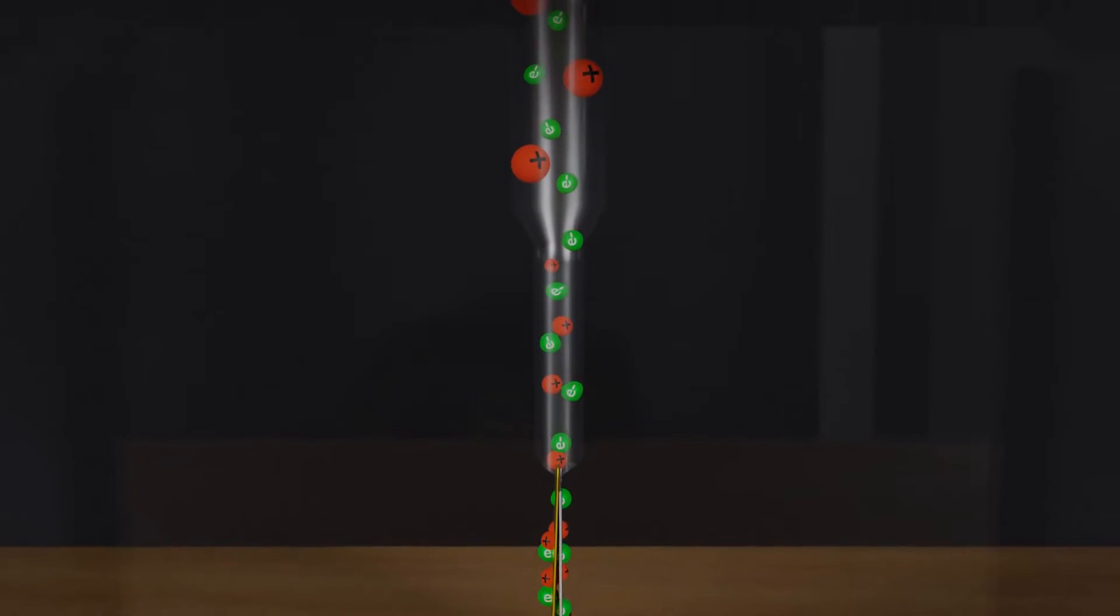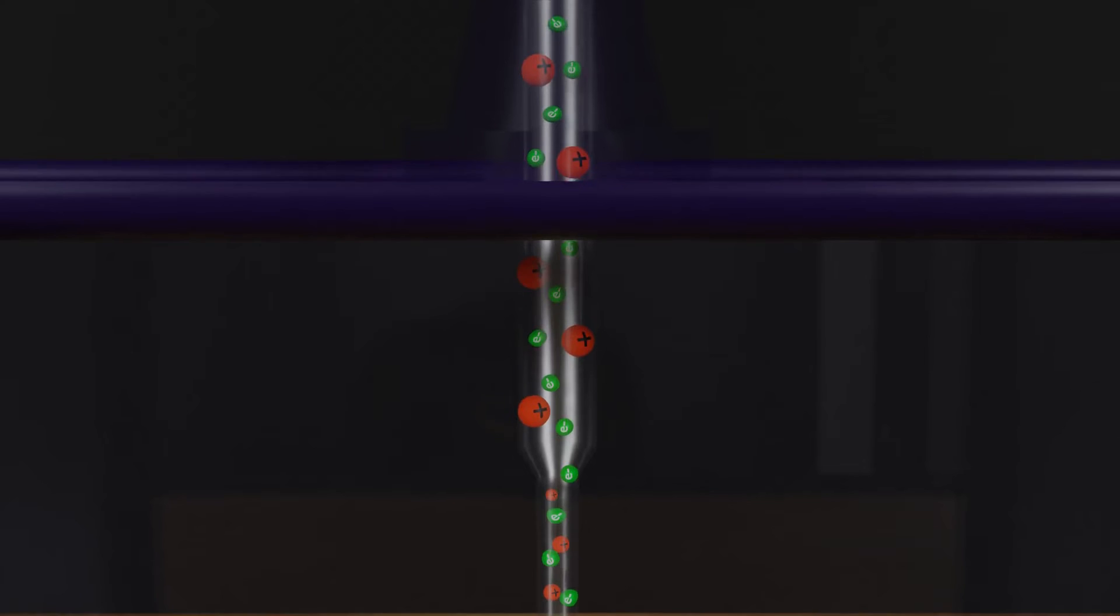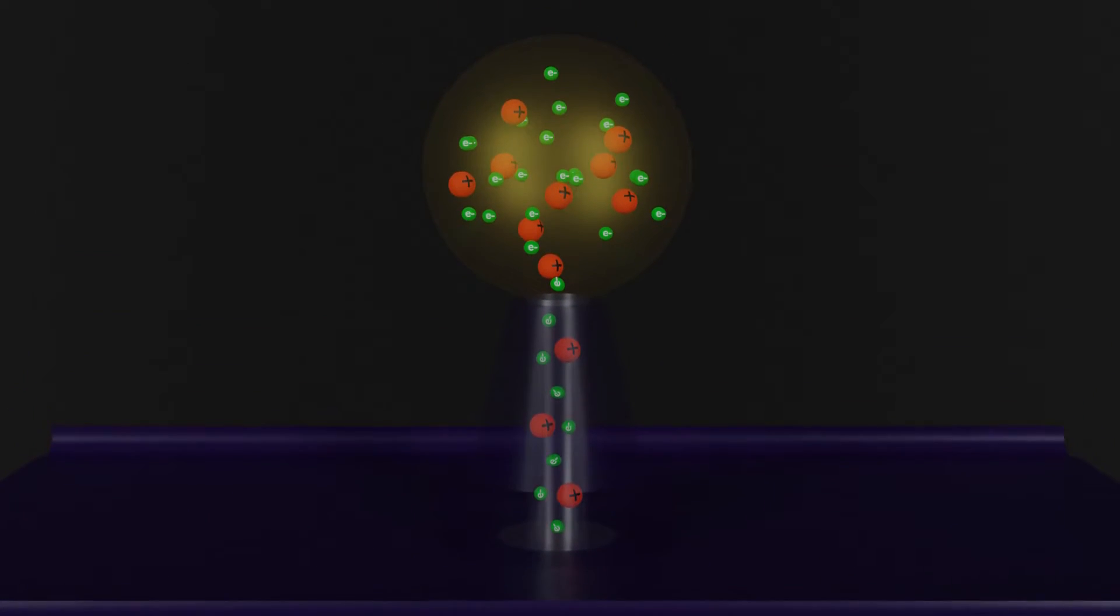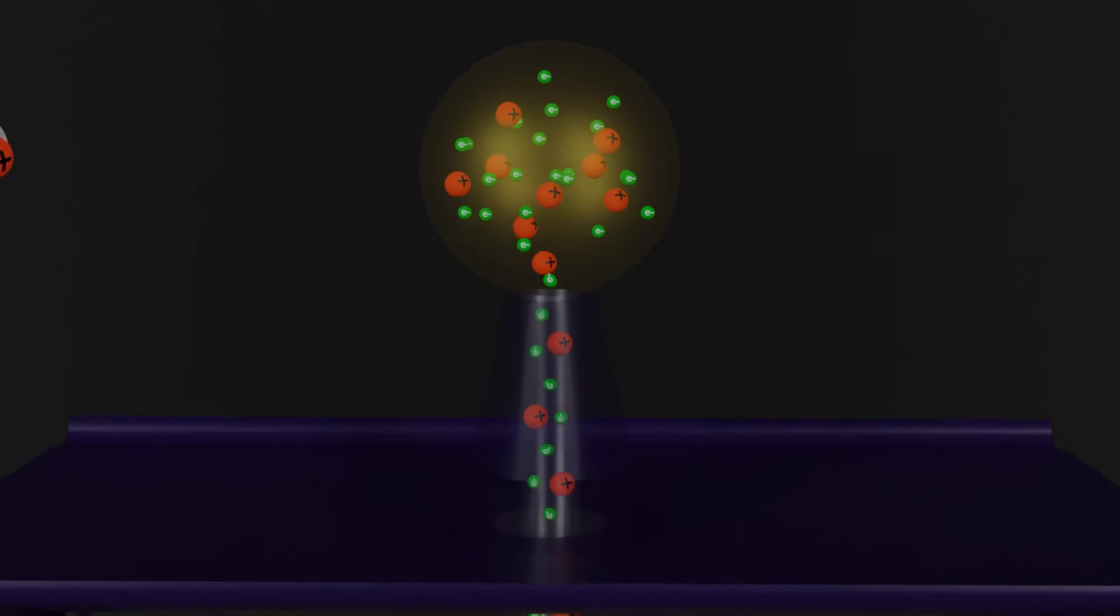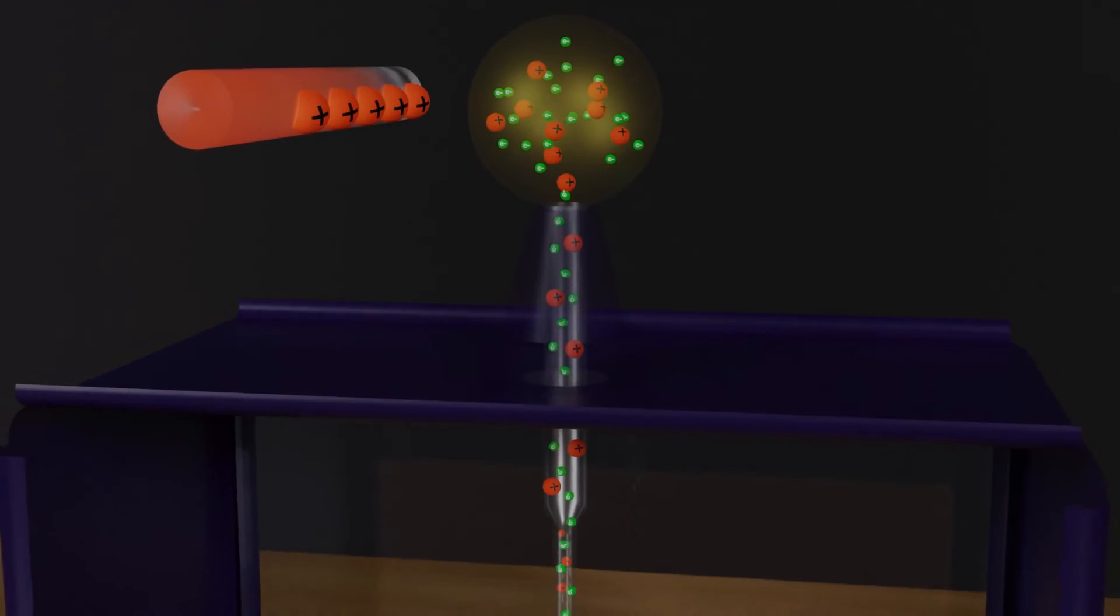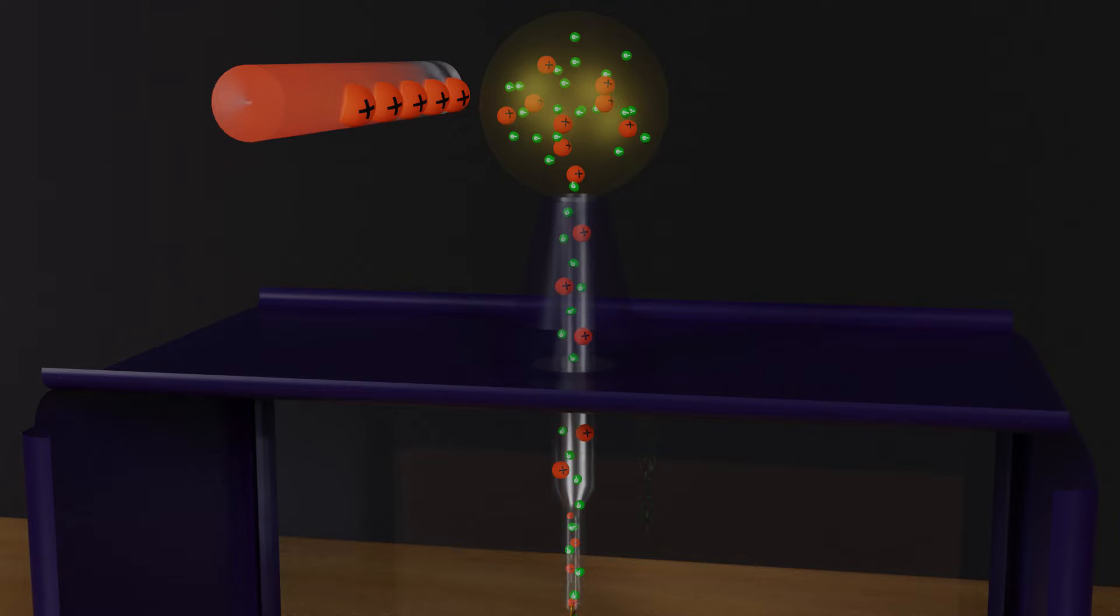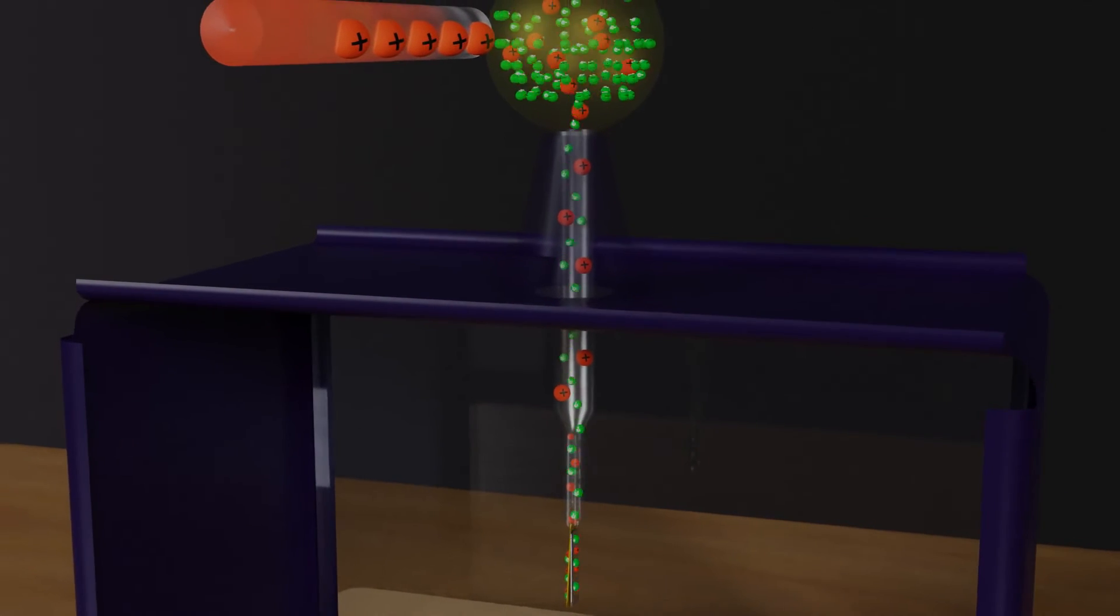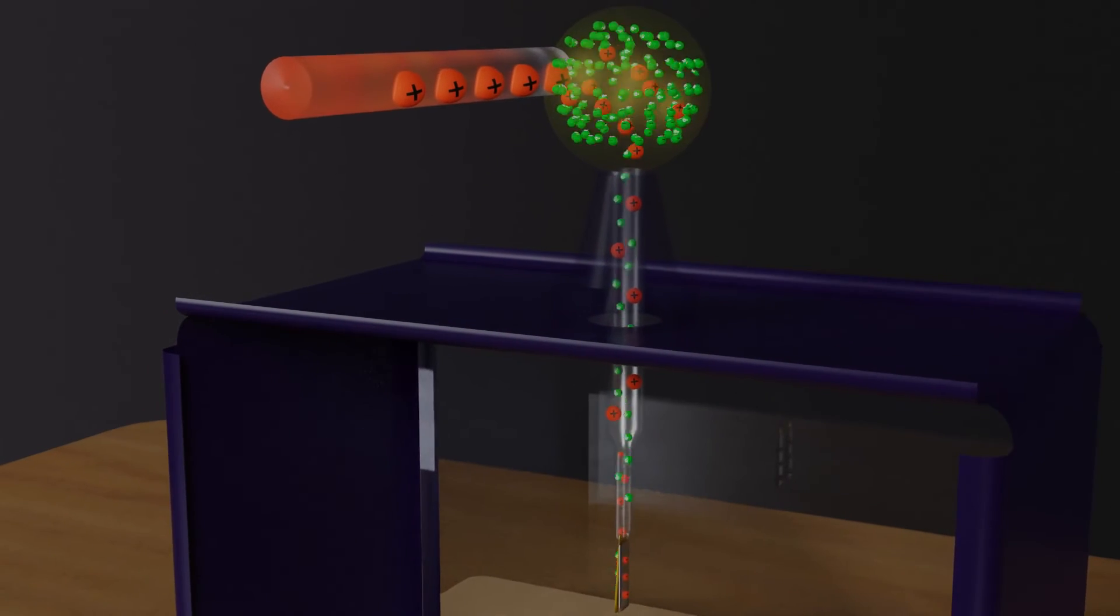As we know, conductors have positive and negative charged particles, free electrons. When we bring a positively charged glass rod close to a conductive sphere, the positive charges of the glass rod attract the free electrons of a metal stem or gold foil, and the electrons move towards the metallic sphere.